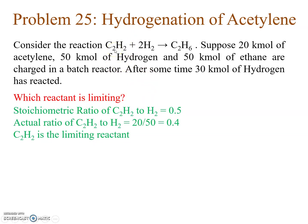According to the reaction, the stoichiometric ratio of acetylene to hydrogen is 1:2, that is 0.5. The actual ratio of acetylene to hydrogen in the feed is 20 divided by 50, that is 0.4. So acetylene is present in an amount less than the stoichiometric ratio, meaning you do not have sufficient acetylene to react completely with hydrogen. Therefore, acetylene is the limiting reactant and hydrogen is the reactant in excess.